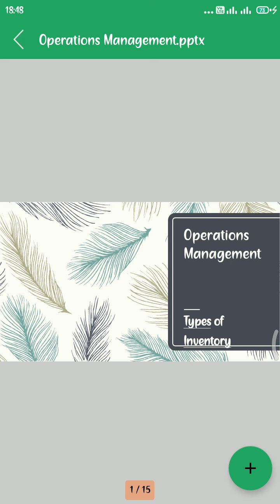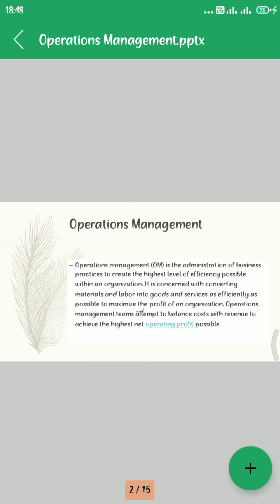Operational Management is the administration of business practice to create the highest level of efficiency possible within any organization. It is concerned with converting materials and labor into goods and services as efficiently as possible to maximize the profit of any organization. Operational Management attempts to balance cost with revenue to achieve the highest net operating profit possible.